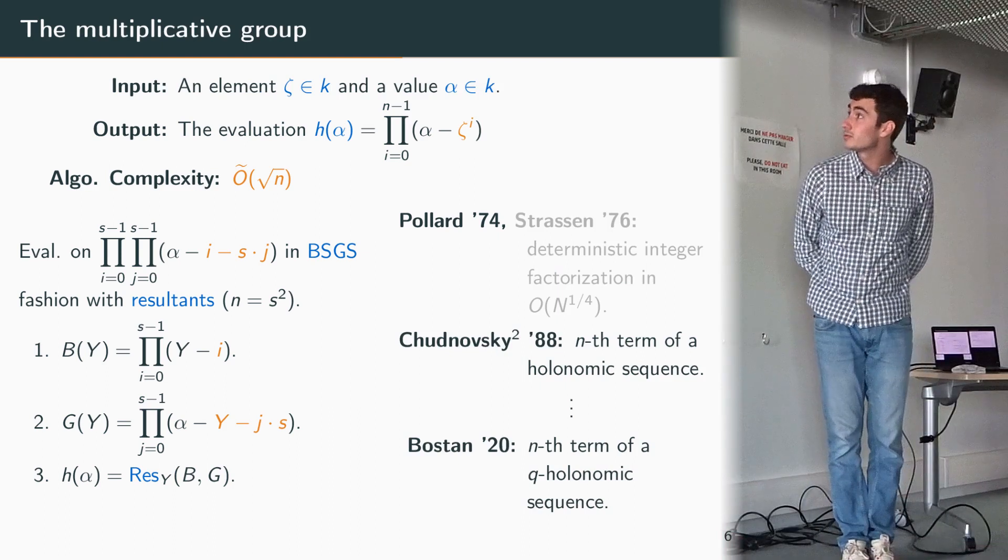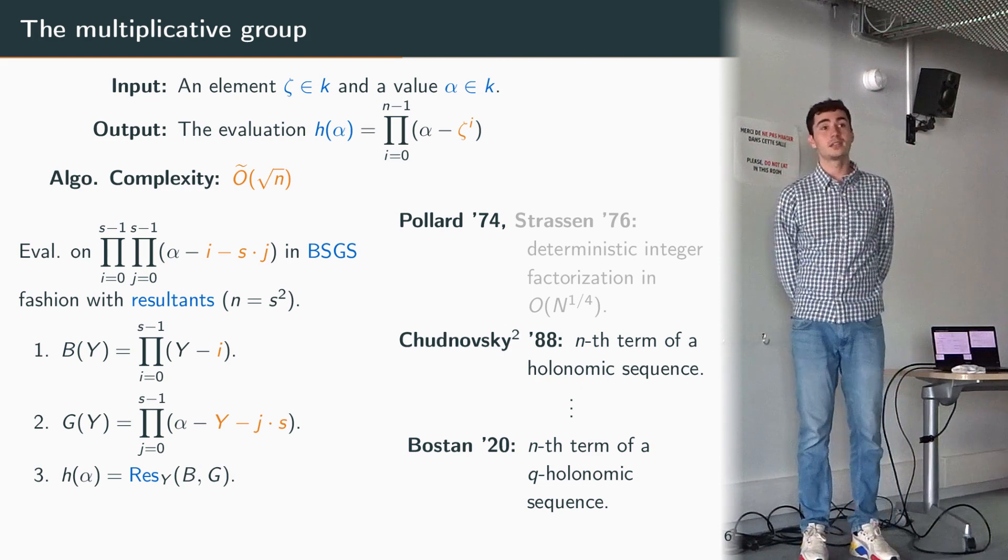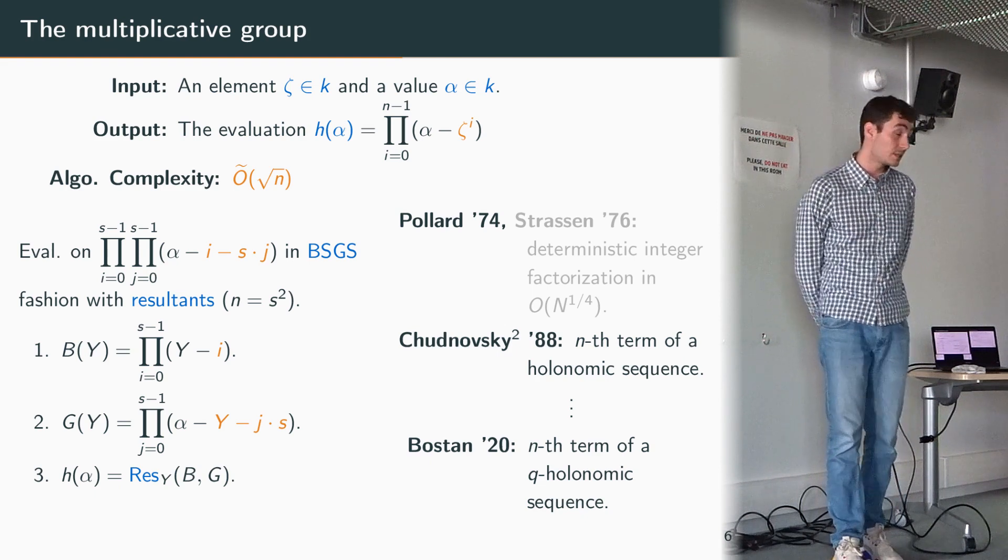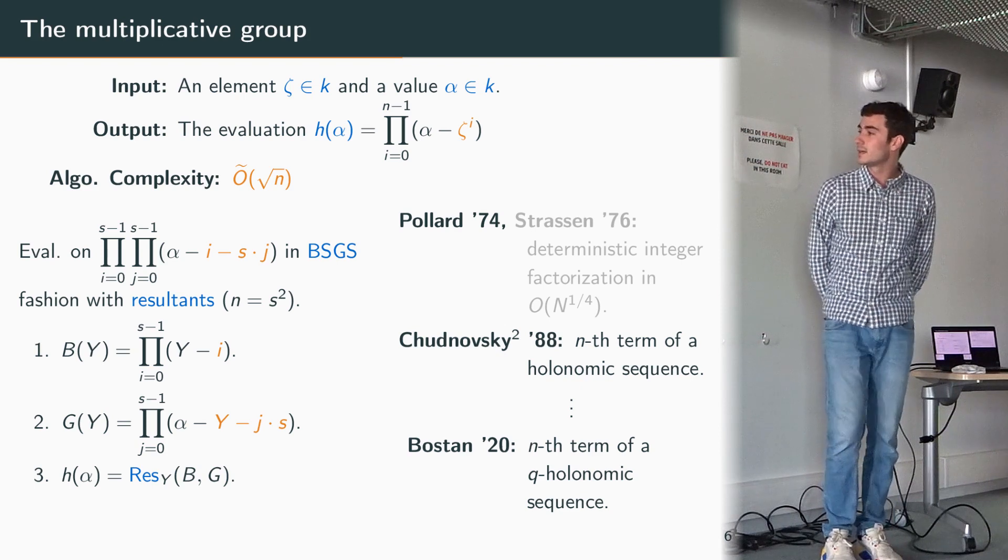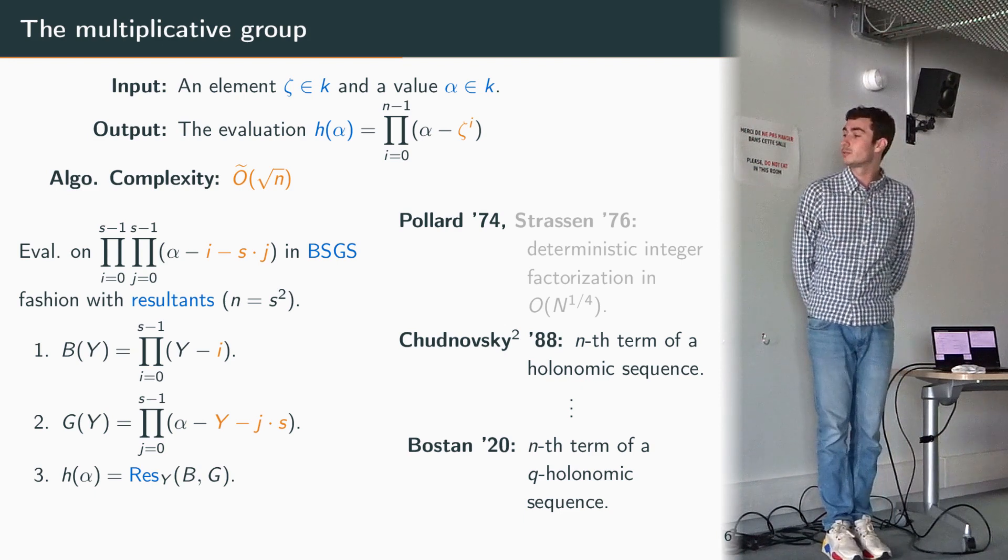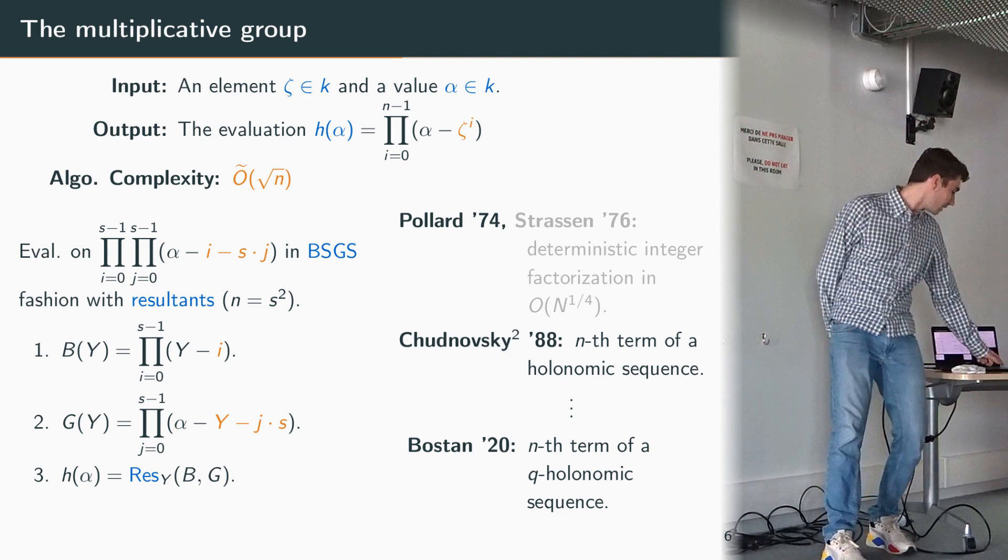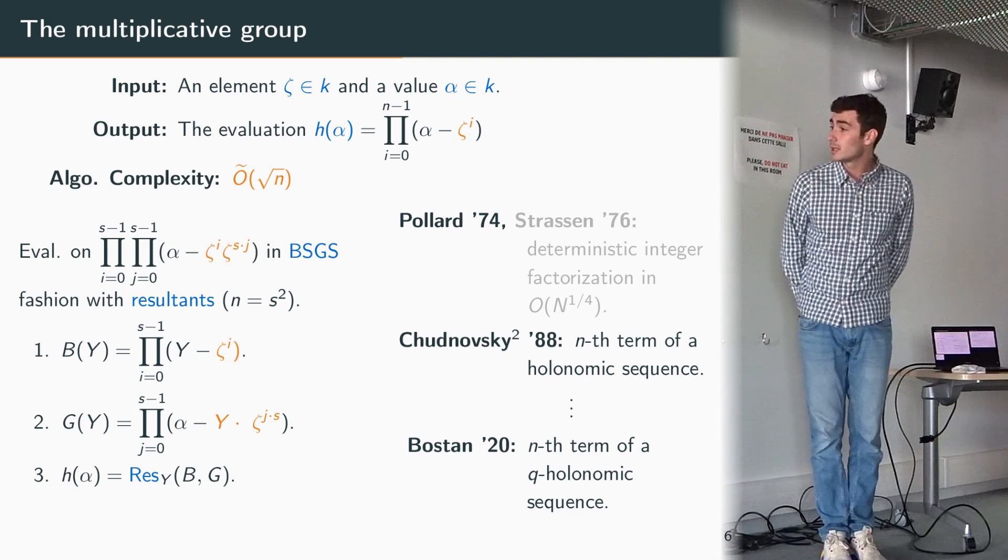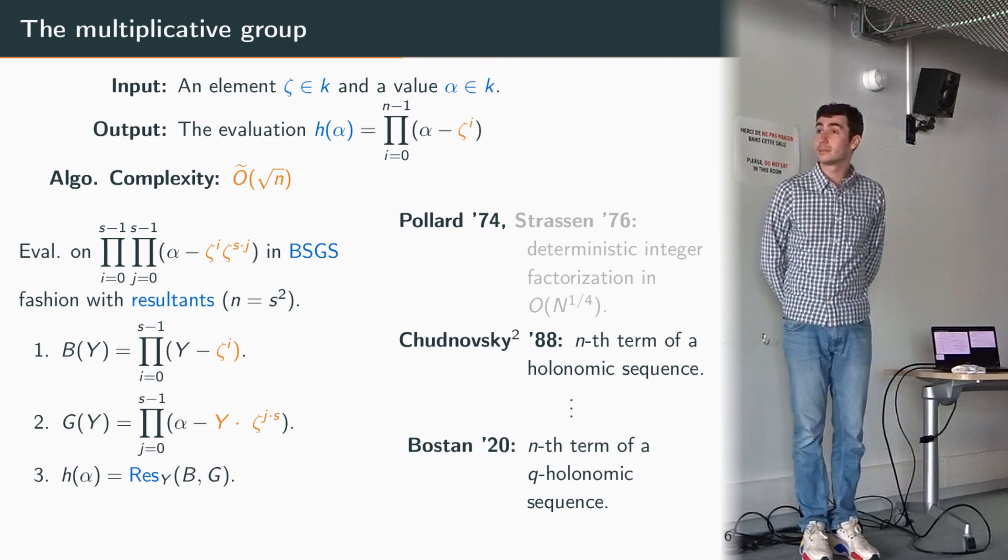Then we can look at another example with multiplicative groups. So here the roots of our polynomials are the integral powers of some field element zeta. In fact this was the problem originally studied by Pollard and then Strassen took his idea and adapted it to his setting. It was also studied by Bostan to compute terms of holonomic sequences. In fact the idea works almost the same way with a few adaptations to the polynomials, but once again the resultant ensures the correctness of the result. The complexity remains the same.